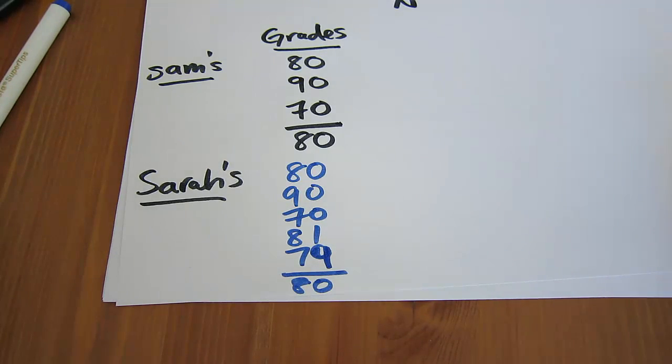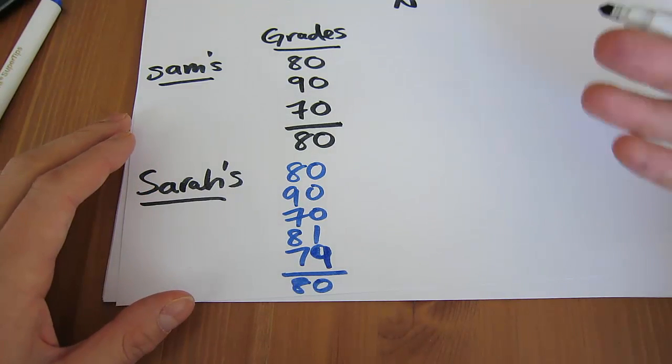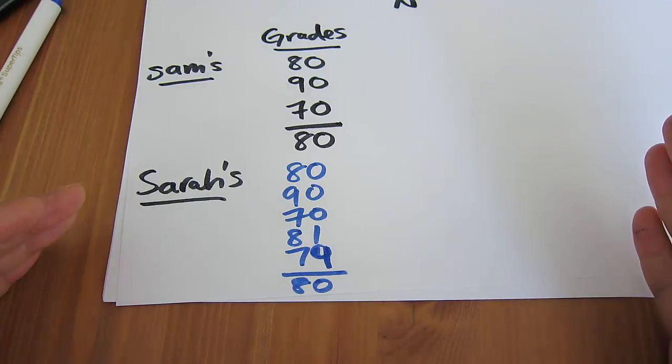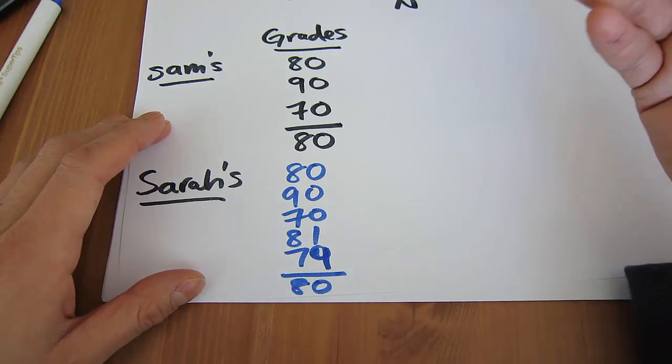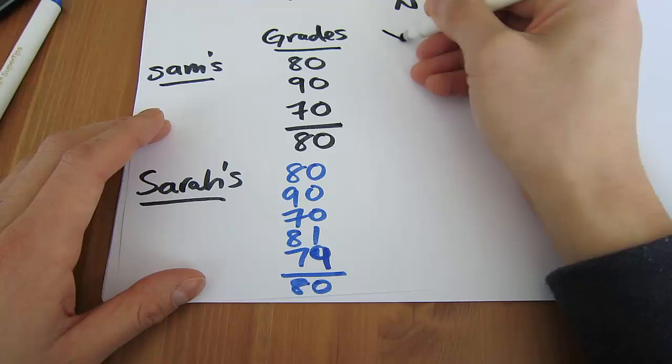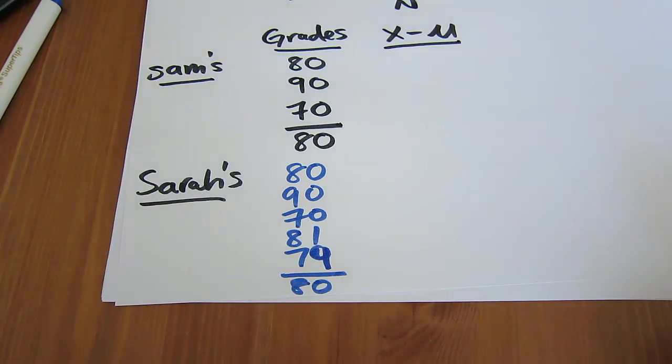So the first thing we want to look at is, well, variance from what? The spread from what? There must be a benchmark that we're comparing these grades to. So the spread from what? And the first thing that should pop into your mind is, well, maybe it's a spread from the mean. So what we might want to look at is, how far is each observation from the mean?